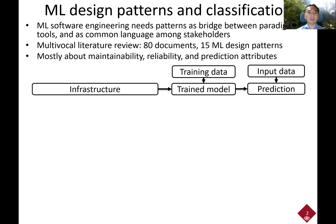Therefore, we conducted a literature review, identified 80 documents, and successfully extracted 15 machine learning software design patterns. We manually reviewed those patterns and found that they mostly address maintainability, reliability, and prediction quality attributes such as accuracy and robustness of machine learning models.